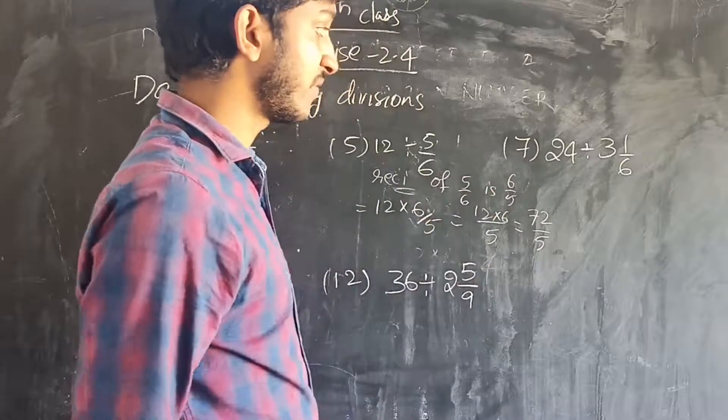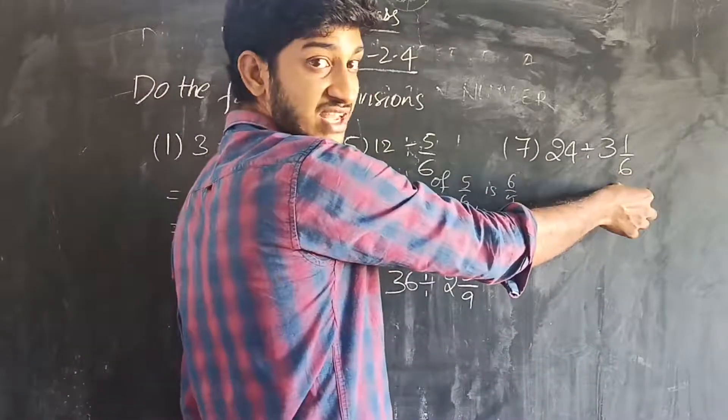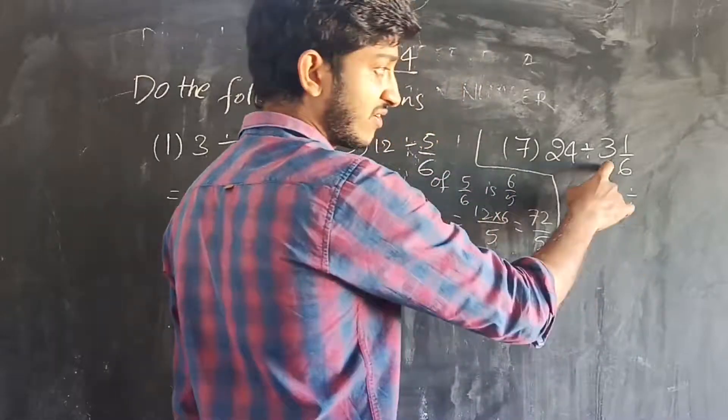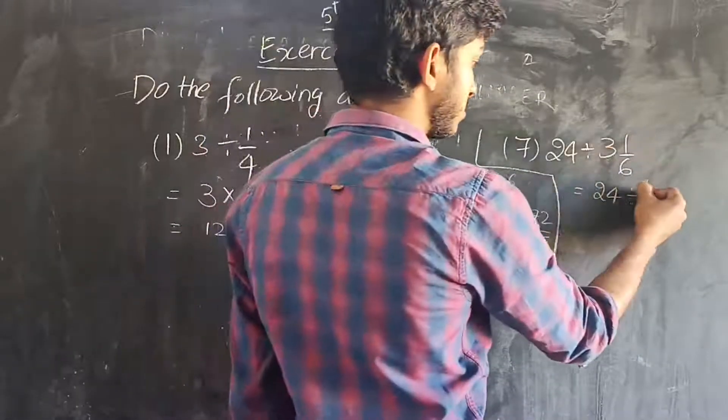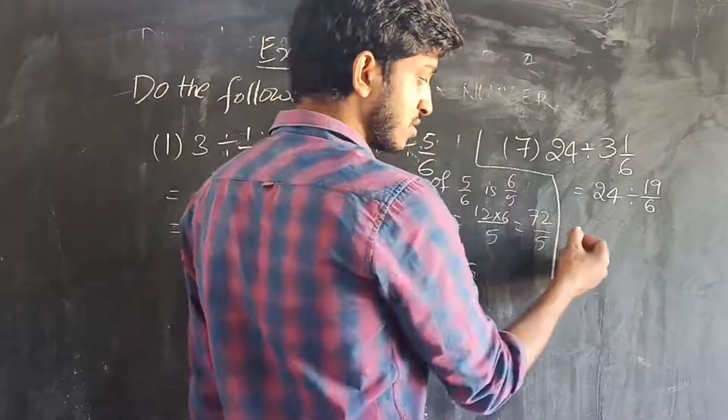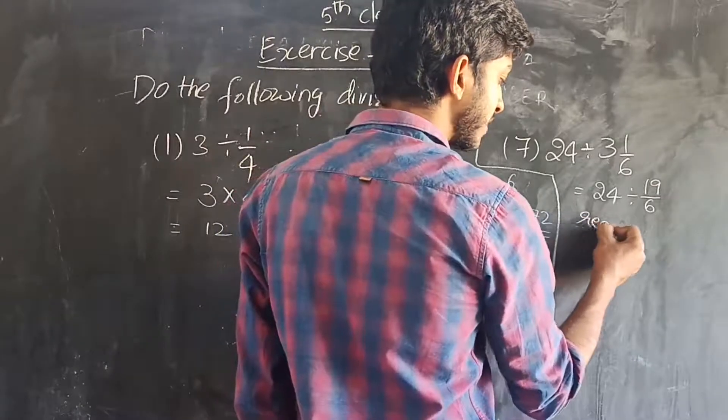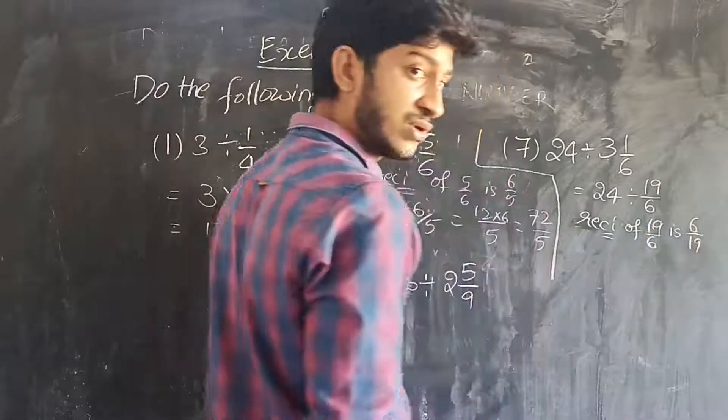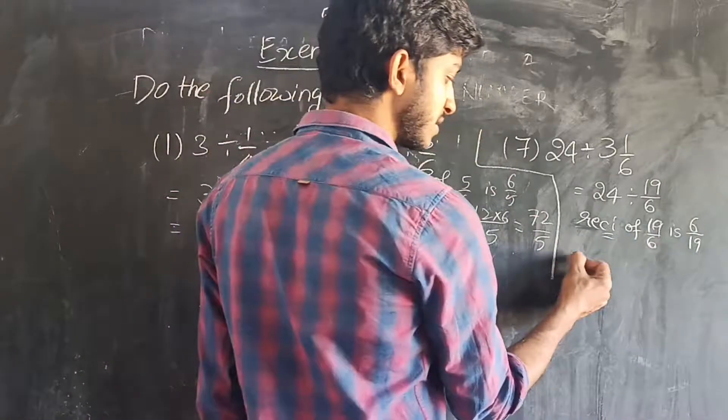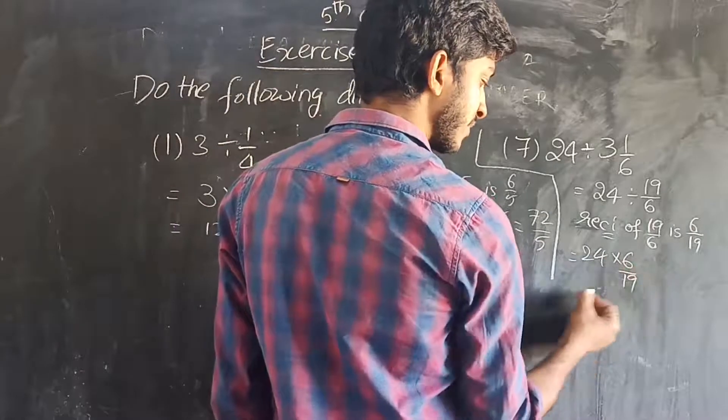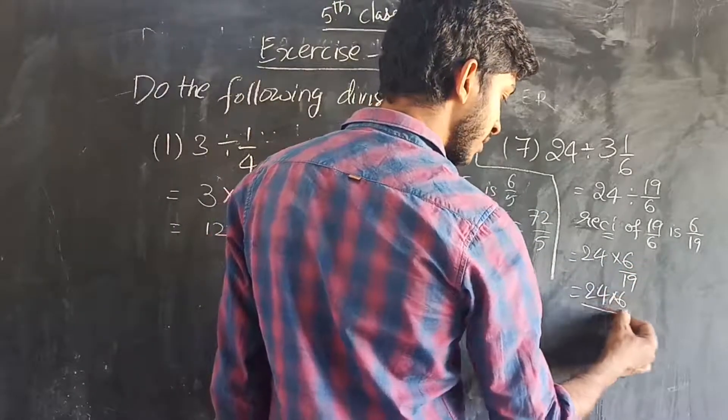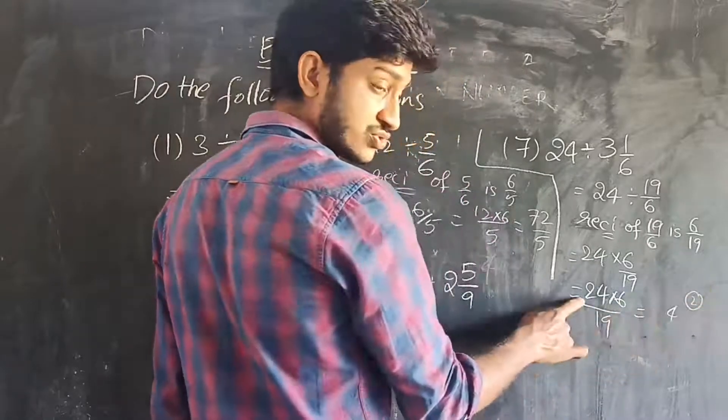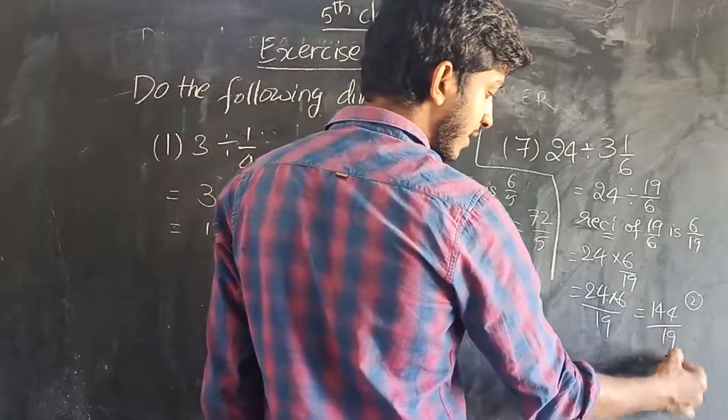See problem 7, 24 divided by 3 1 by 6. So in the mixed fraction, we cannot change to improper fraction. 24 divided by, 6 times 3 is 18, 18 plus 1 is 19 by 6. Now reciprocal of 19 by 6 is 6 by 19. So 6 by 19 to 24 multiply. That is equal to 24 into 6 by 19. 24 into 6, 6 fours are 24, 6 twos are 12 plus 2 is 14. 144 divided by 19 is the answer.